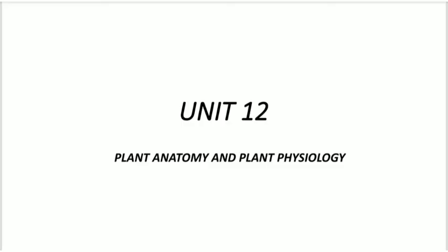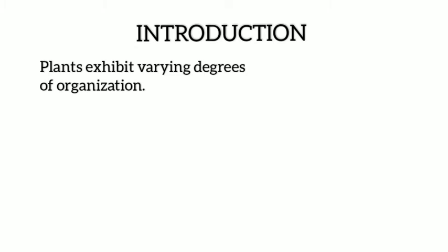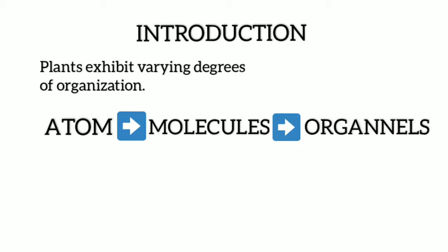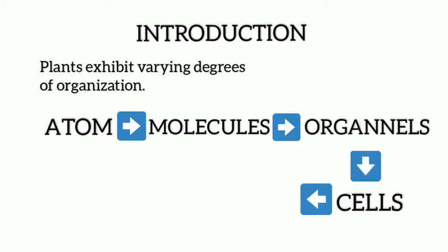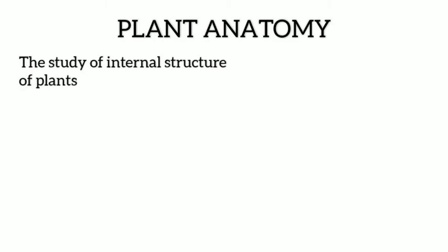The first unit in your textbook is plant anatomy and plant physiology. In the coming weeks, I would be dealing with all the concepts in the unit coverage. We start with the introduction. Plants exhibit varying degrees of organization. As you all know, everything in this universe is made up of atoms. Atoms are organized to form molecules, molecules are organized to form organelles, organelles into cells, cells into tissues, and tissues into organs. Before we get into a detailed study, we need to know what is plant anatomy. It is a study of the internal structure of plants.